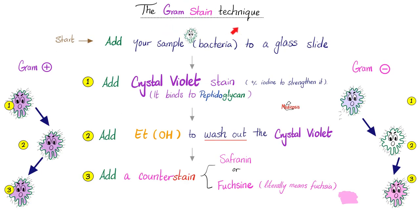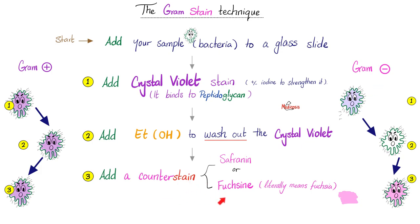You perform the gram-stain by adding crystal violet to the bacteria, then adding ethanol to wash it out. You successfully wash it away from gram-negatives because they have a thin cell wall, but you cannot wipe it off the thick gram-positive. So gram-positives retain the crystal violet and appear purple, while gram-negatives lose their purple, acquire the counter-stain, and appear fuchsia pink.